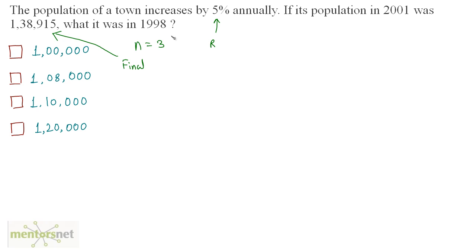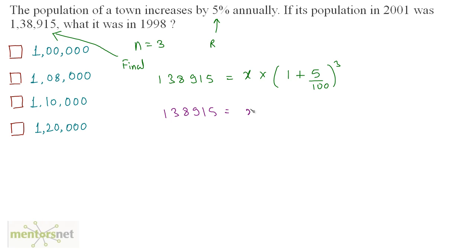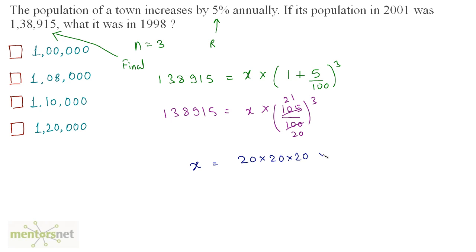We have to find the initial value x. So: 1,38,915 equals x times 1 plus 5 upon 100, raised to 3. This evaluates to 1,38,915 equals x times 105 upon 100, to the power 3. Dividing numerator and denominator by 5: 5 times 20 is 100 and 5 times 21 is 105. Therefore x equals 20 cubed times 1,38,915 divided by 21 cubed.